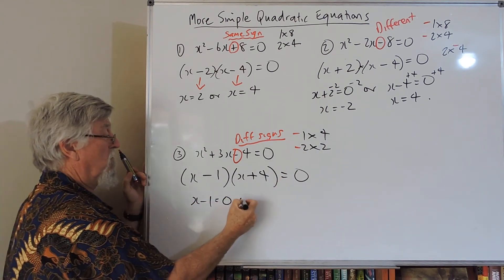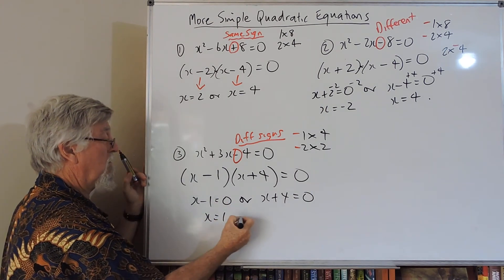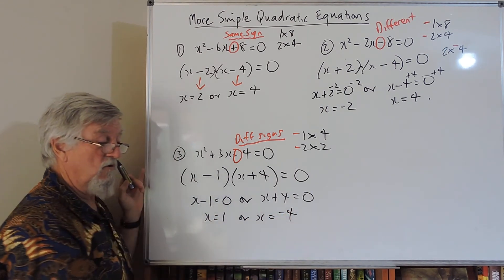And then I go x minus 1 equals 0 or x plus 4 equals 0. And then I get x equals 1 or x equals minus 4. I need the two solutions.